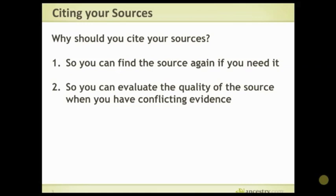If you talk to anybody who's been doing this a while, they'll tell you sad stories — myself included — of evidence and information they found that helped them prove something, but they didn't make a copy, they didn't cite their source, and then they can never find it again. Even if your source is not perfect, even if it's just a note on what book you found it in or a URL, record something so you can go back and find it again. You can always clean up your citation and make it pretty later, but write down something — you will save yourself a lot of grief.